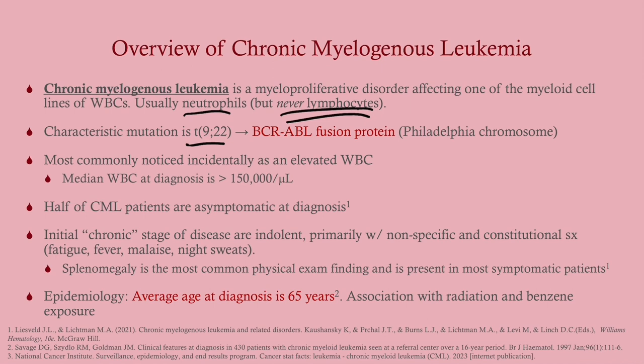The characteristic mutation is t(9;22). This is probably the one translocation you've got to remember, because it gives rise to a very special protein: the BCR-ABL fusion protein, sometimes written as BCR-ABL1. This is also known as the Philadelphia chromosome — you might see 'Ph positive.' This fusion protein is a tyrosine kinase that stimulates the cell cycle, so you get unchecked proliferation — the BCR-ABL fusion protein is always on.